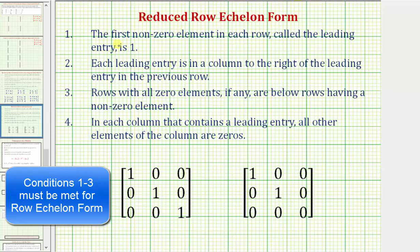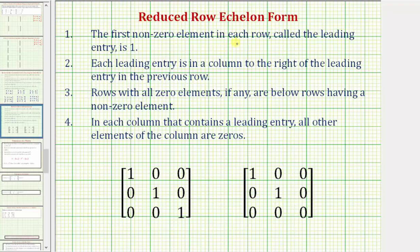Number one, the first non-zero element in each row, called the leading entry, must be a one. Two, each leading entry, or one, is in a column to the right of the leading entry, or one, in the previous row.